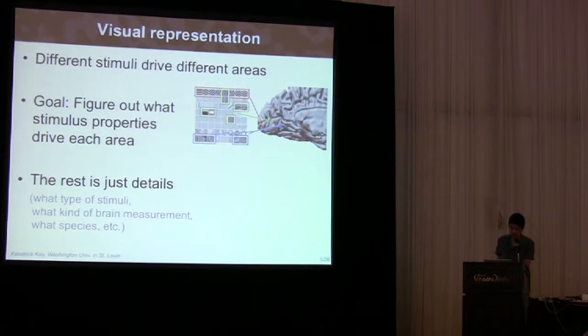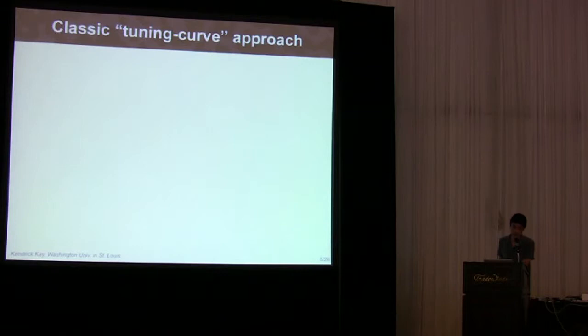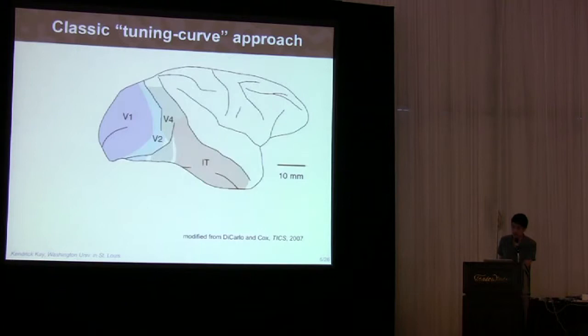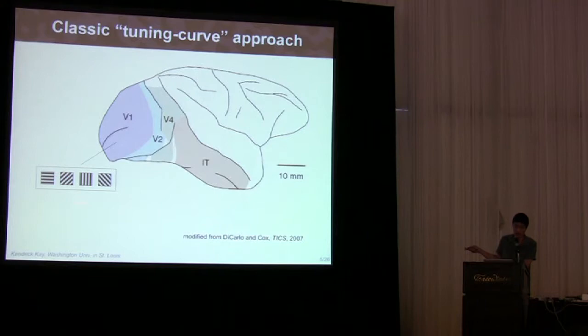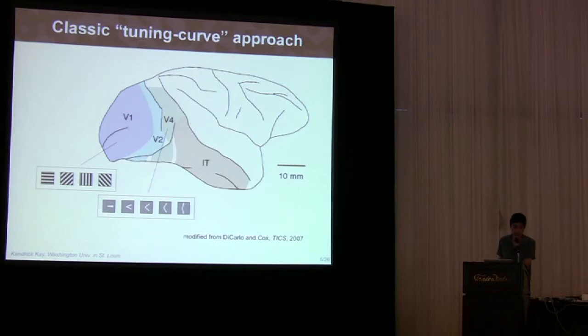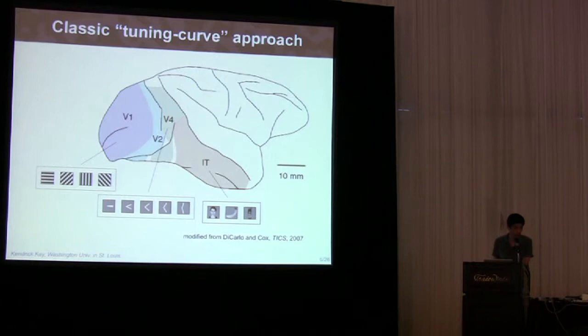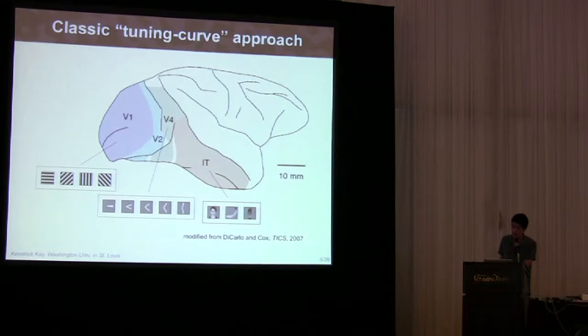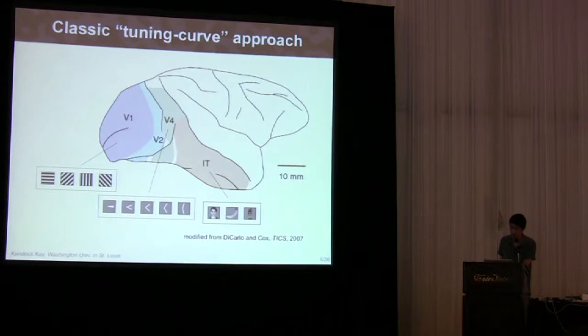Now, the classic approach to studying representation involves what we might call a tuning curve approach. Basically, we hypothesize some stimulus dimension, we construct stimuli that vary along that dimension, and then we measure responses. If we think orientation is important in V1, we might use sinusoidal gradients that vary in orientation. If we think curvature is important in V4, we might use angle stimuli. And if we think object category is important in IT, we might use these objects. This provides useful information, but ultimately provides an incomplete picture. In any given area, many stimuli will drive responses, not just the stimuli you chose.